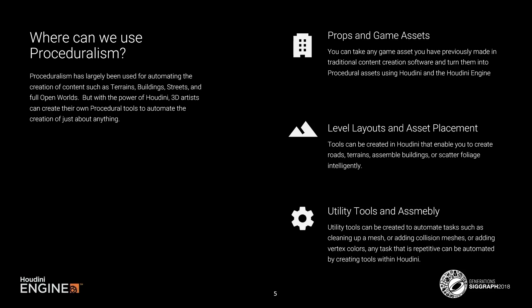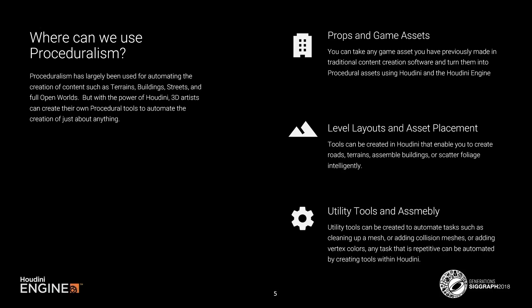If you're starting out with proceduralism or Houdini, I highly recommend beginning with just props and in-game test assets — small things like trees, or taking something like a fence and modeling it procedurally in Houdini instead of Maya or Max. That way you can change it on the fly really quickly. That's a great place to start: props and game assets.